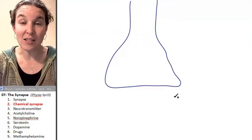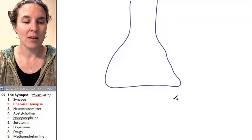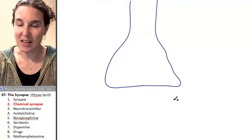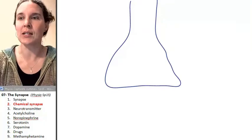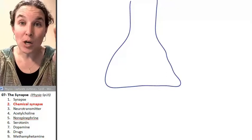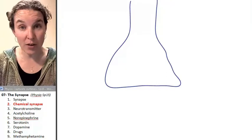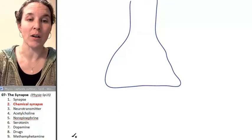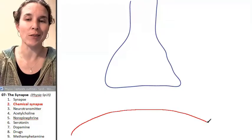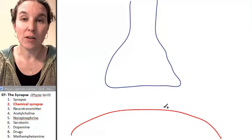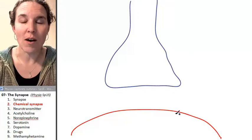The axon terminal is not touching the next person in line. The next person in line could be another neuron or it could be an effector. I'm just going to make a rather amorphous thing. It's either another neuron or an effector.